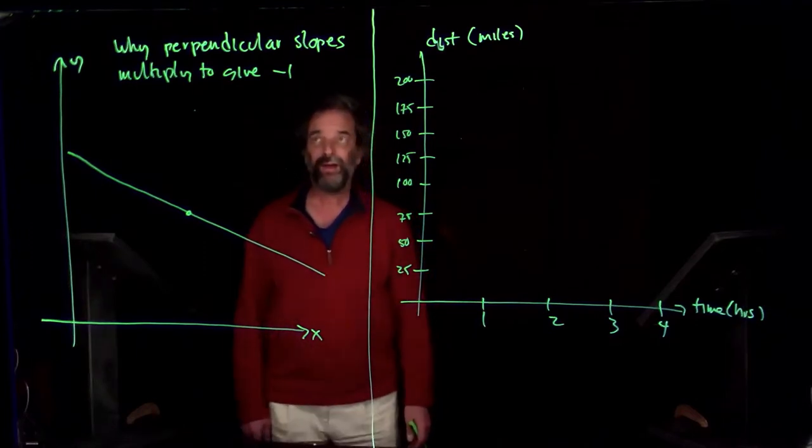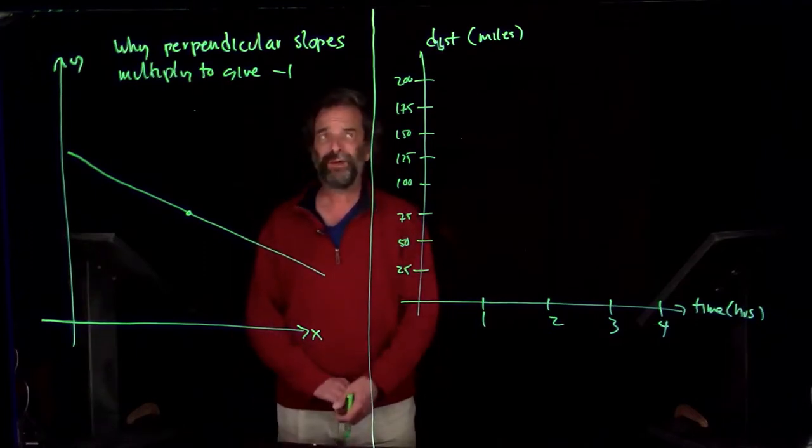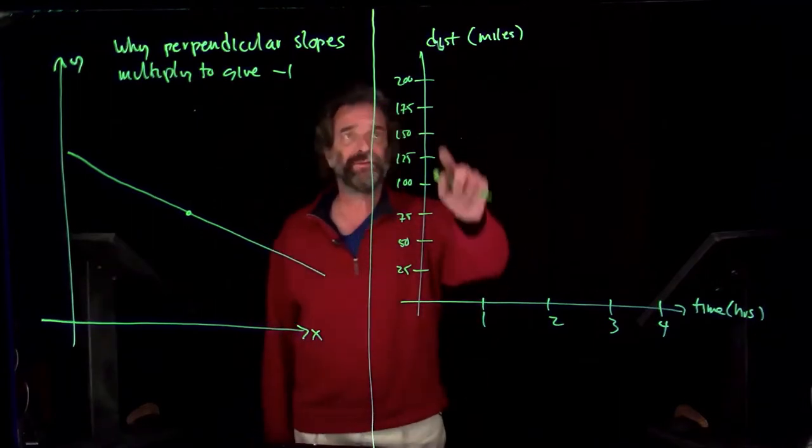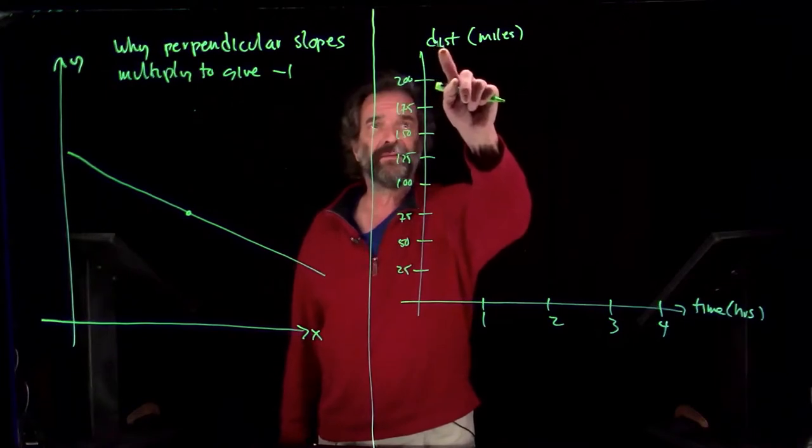Well, I promised to show you why we might think perpendicular slopes should multiply to be minus 1. I also wanted to talk more about average rate of change, so that's the content of this slide.